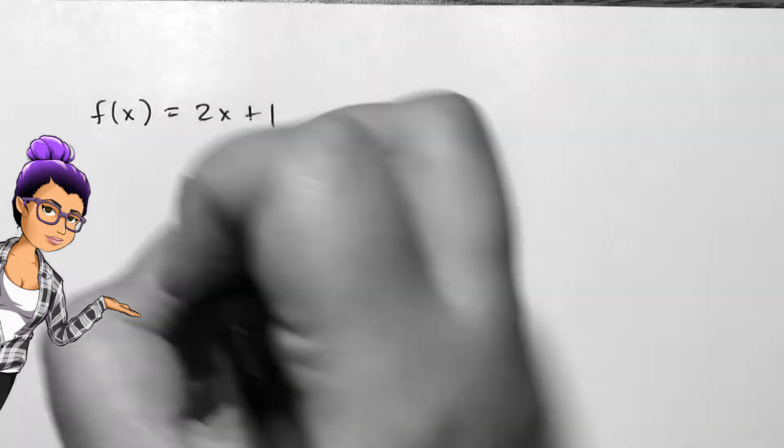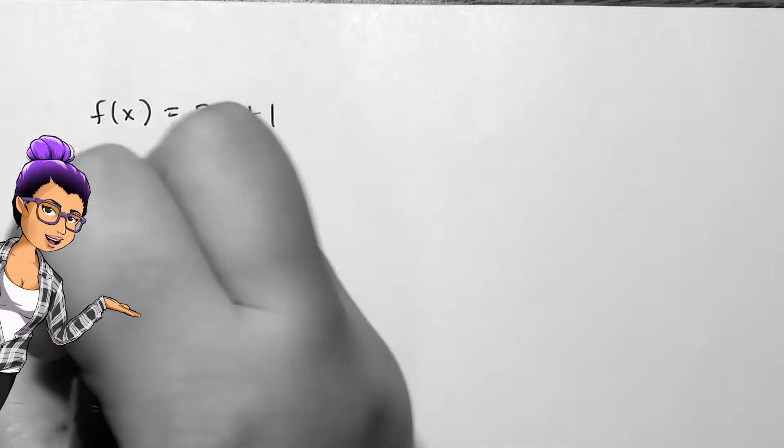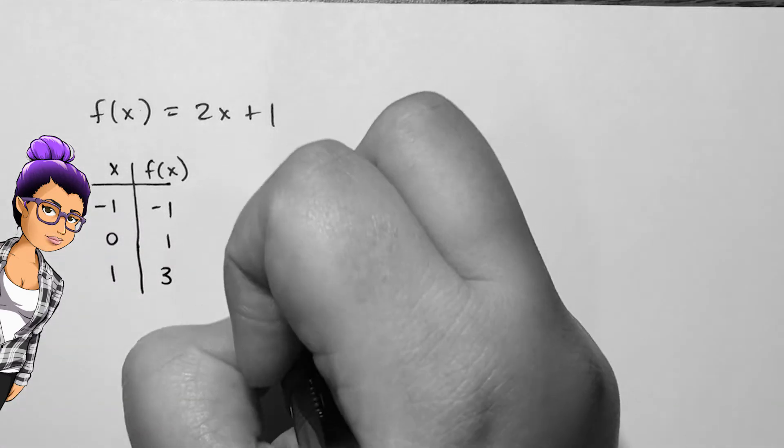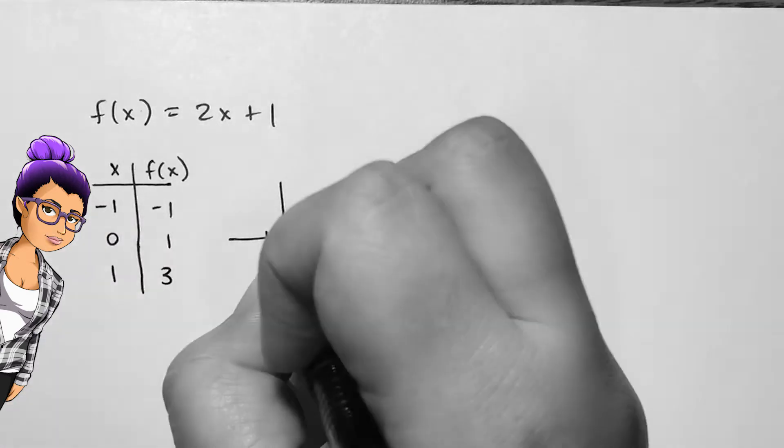Say we have a function f(x) = 2x + 1. I can graph this by plugging in a few values. Negative 1 outputs negative 1, 0 outputs 1, and 1 outputs 3.